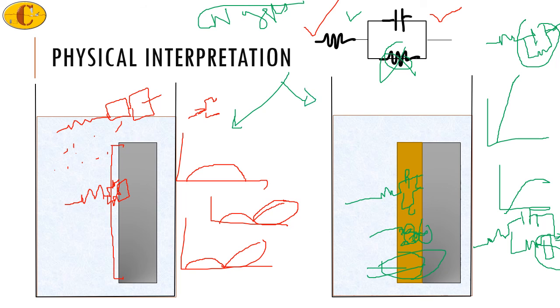Thus whenever you want to match the circuits with the Nyquist plots, the first step is to see your physical system. Unless you go to actual physical system and hypothetically say what the changes might be, you may not get the correct circuit and you may not even get the right interpretation.